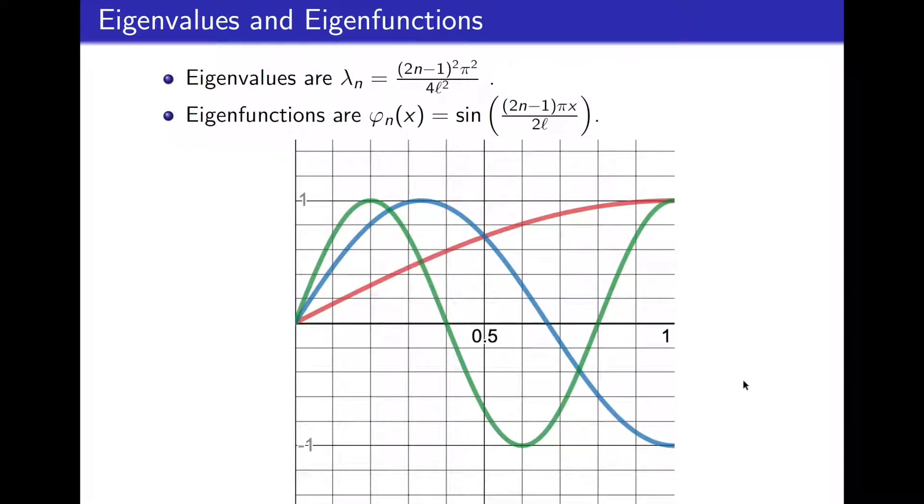All right, and here we have a plot of the first three eigenfunctions. Note that at the right boundary, x equals L, the functions are no longer 0. However, we do see that they are flat. This corresponds to the derivative being 0 at the right boundary. However, the function itself is 0 at the left boundary at x equals 0. So these three functions correspond to the new mixed boundary conditions.